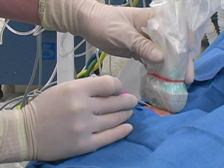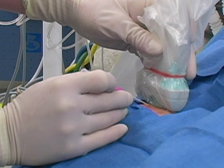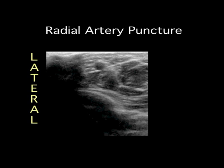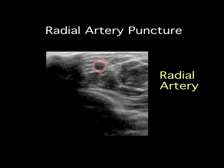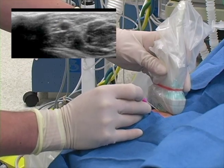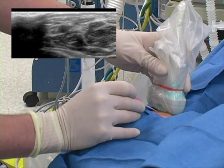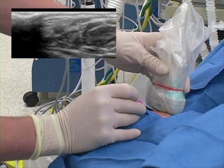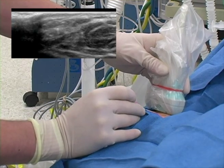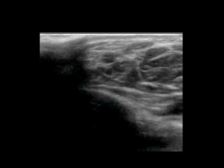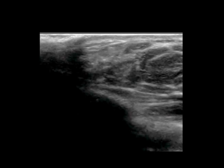Now let's take a look at the sonogram of the wrist that the operator will use to guide the arterial puncture. Lateral is on screen left, which corresponds with the operator's left. The radial artery is near the skin surface and is clearly pulsatile. The operator advances the needle, which is seen indenting the artery. Looking at the sonogram, we see the hyperechoic needle tip enter the artery, which corresponds with the flash of arterial blood.